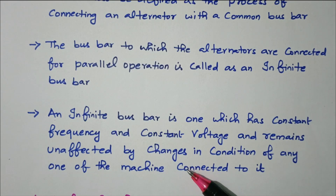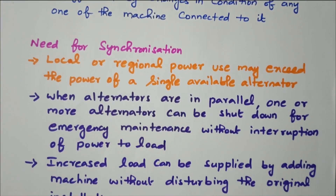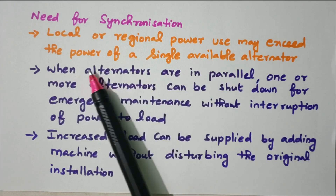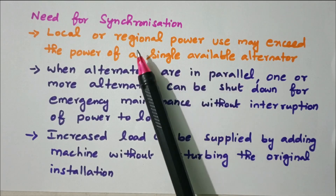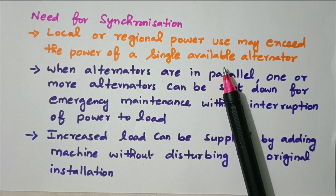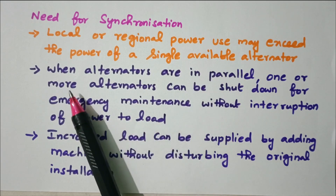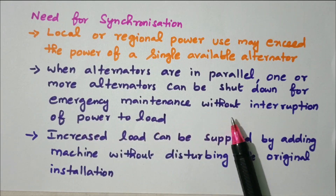Synchronization is connecting more than one alternator to the bus bar without any interruption. The need for synchronization: first, local or regional power use may exceed the power of a single available alternator. A single alternator is not enough to meet the load, so we need to connect more alternators to the bus bar in order to meet the power requirement.